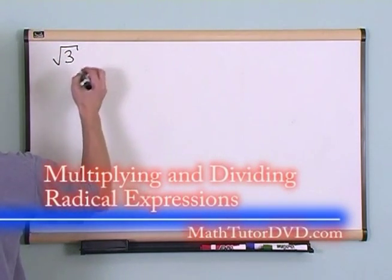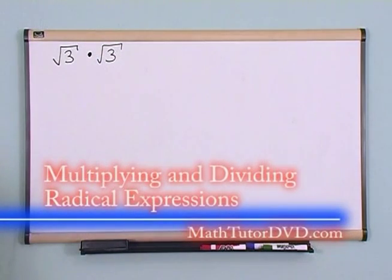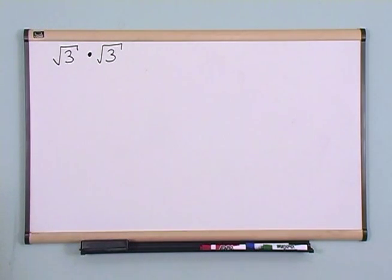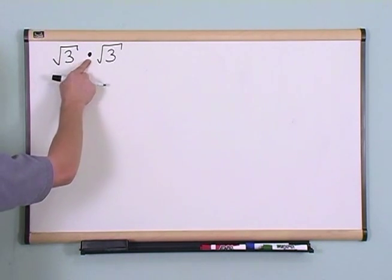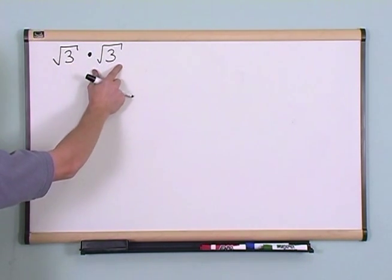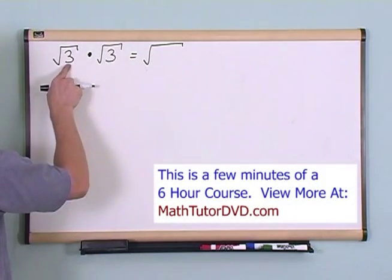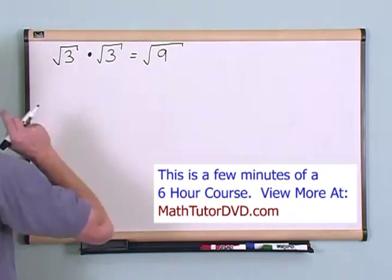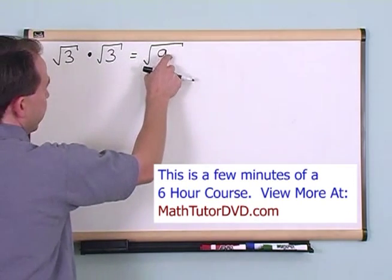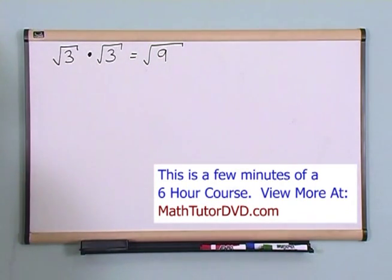Let's say you have the square root of 3 times the square root of 3. The most basic principle of multiplying and dividing radicals is this: when you have a radical, like a square root or a cube root, and you're multiplying it by another radical, all you do is write another radical sign down and multiply the insides. 3 times 3 is 9, and you keep that underneath a new radical.